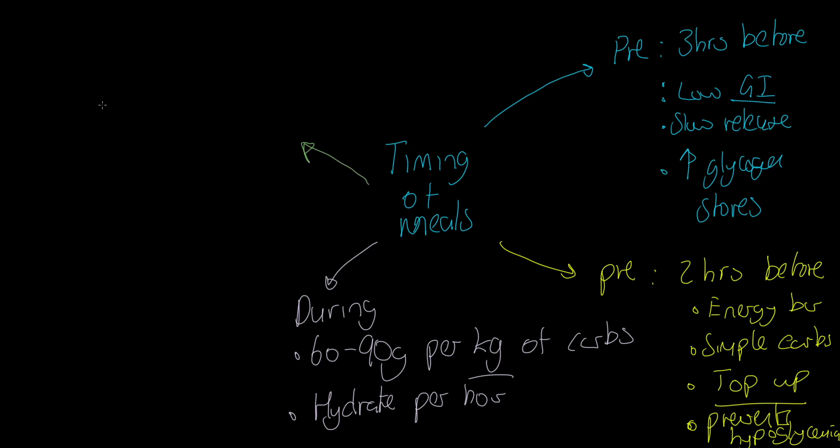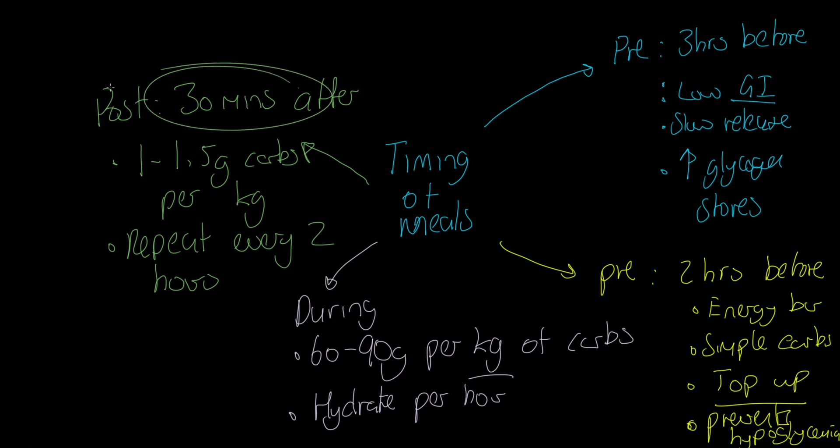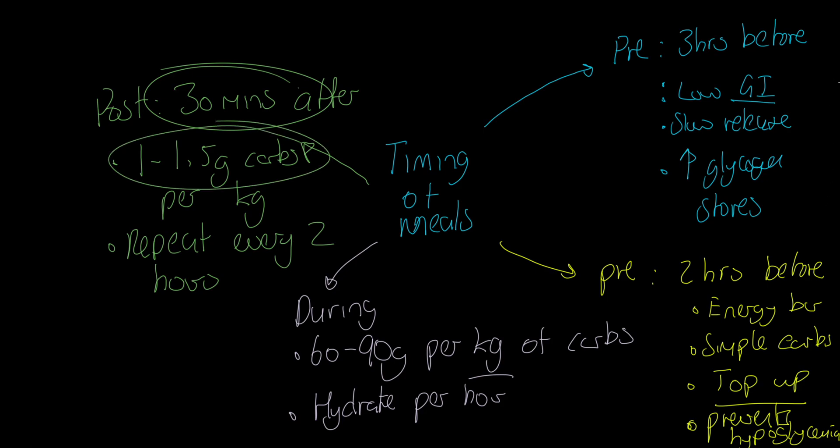Finishing this off, what do we want to do post-exercise? I'm going to look at protein in a second. But post, we are looking for 30 minutes after competition, after performance. We want 1 to 1.5 grams of carbs per kilogram. We've got quite a specific measure there. And what do we want to do? We want to repeat every two hours. It's not just about taking some carbs on straight after in that carbohydrate window, but we want to be doing that repeatedly. That's the specific measure.